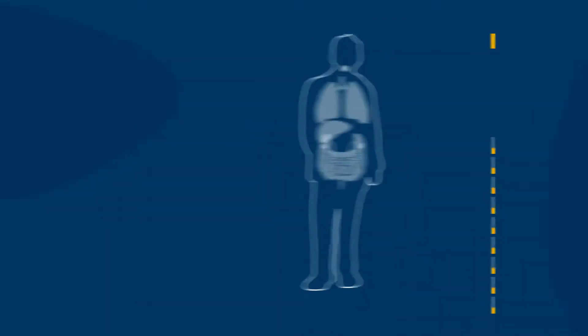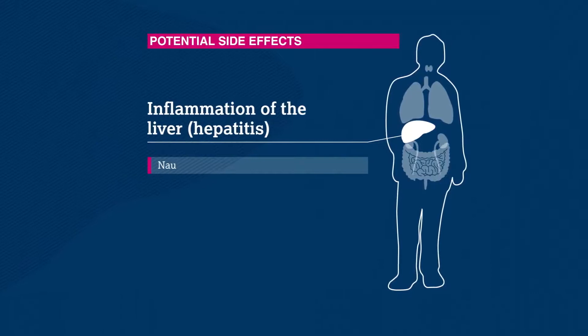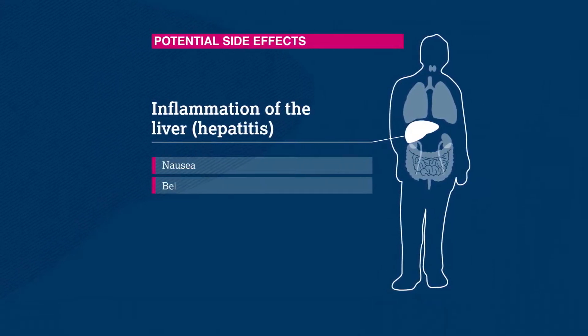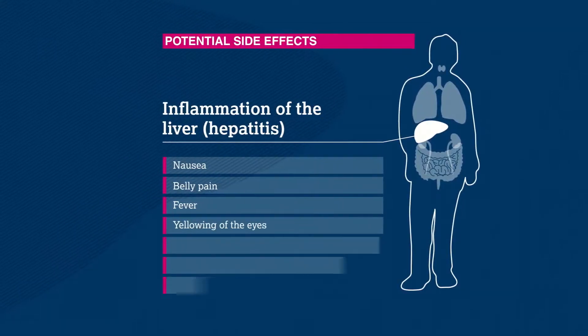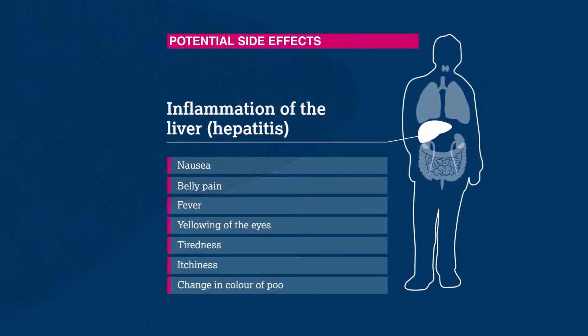The liver may also be affected, making patients feel like throwing up or causing belly pain. This can also cause fever, yellowing of the eyes, and a few of the other symptoms we've mentioned.